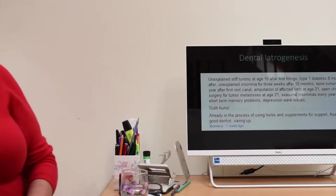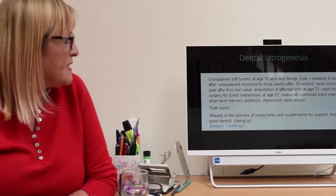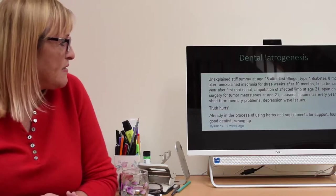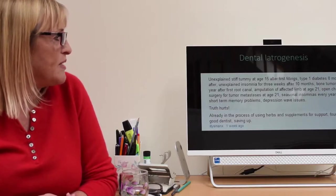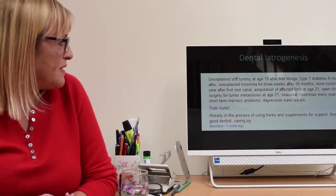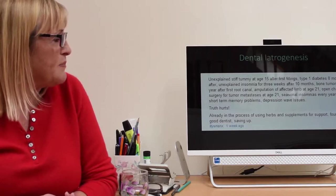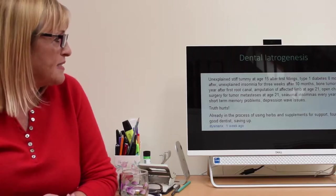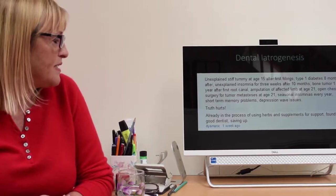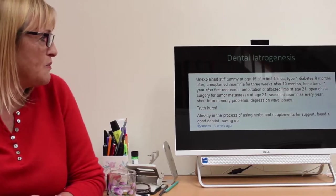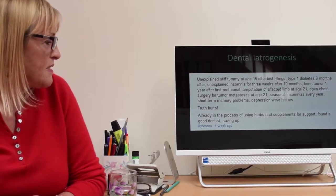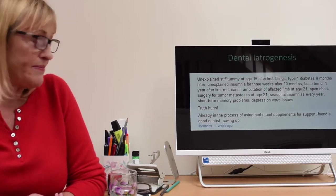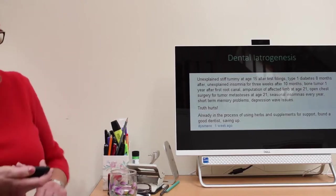This was, I don't know where I got this from now. Unexplained stiff tummy at age 15 after first fillings. Type 1 diabetes eight months after. Unexplained insomnia for three weeks after 10 months. Bone tumor one year after first root canal. Amputation of affected limb at age 21. Open chest surgery for tumor metastases at 21. Seasonal insomnias every year. Short term memory problems. Depression, weight issues. Tooth hurts. Already in the process of using herbs and supplements for support. Found a good dentist saving up. This is where the dentists are causing the disease.